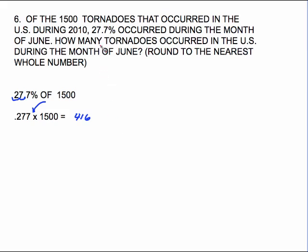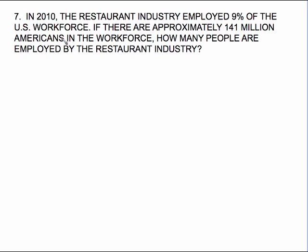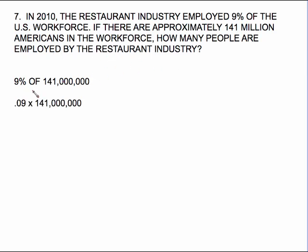That's a pretty straightforward, type-it-into-the-calculator kind of problem, and so is this one. In 2010, the restaurant industry employed 9% of the U.S. workforce. If there are approximately 141 million Americans in the workforce, how many people are employed by the restaurant industry? We're looking at 9% of 141 million. 9% as a decimal is 0.09, and 'of' means times. Type that into the calculator and you get 1,269,000 workers employed by the restaurant industry.